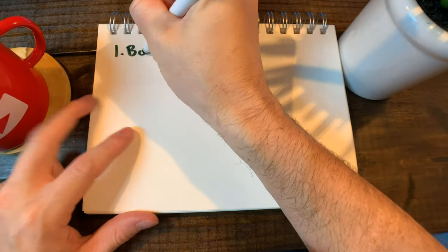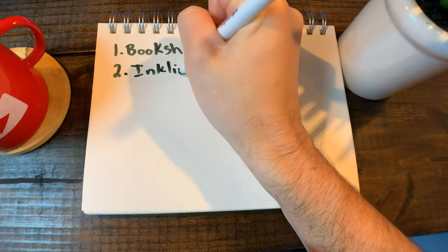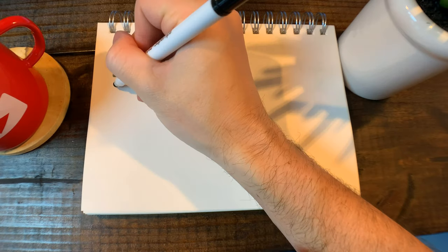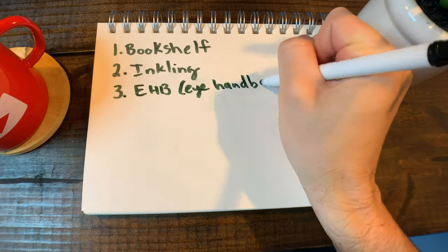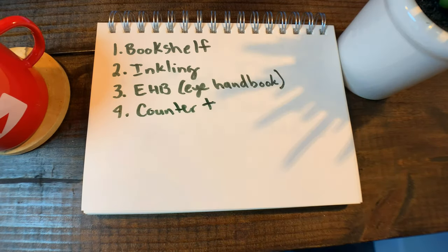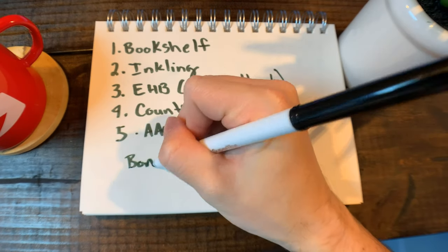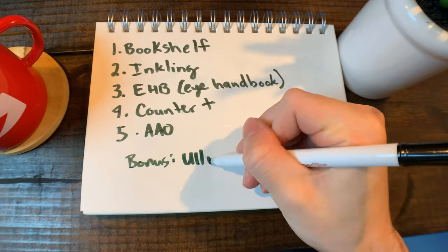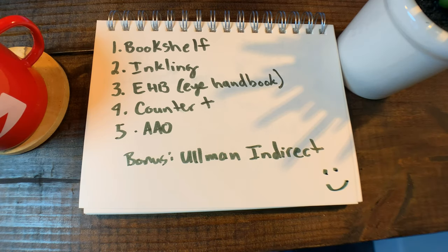To sum up, the five apps I like to use are: the Bookshelf app for Wills, the Inkling app to store all my other texts and books, the Eye Handbook app which lets you do some testing on the fly in the ER, the Counter Plus app to keep track of procedures, and the AAO app. And if you want to try the Ullman Indirect to get pictures of the retina, you can do that too. If you liked the video, hit the like button, subscribe to the channel, and I'll see you in the next one.